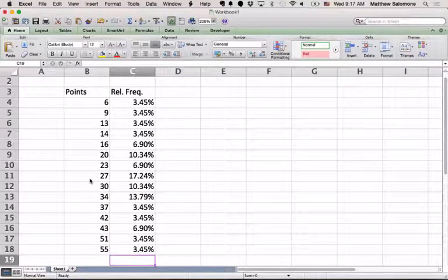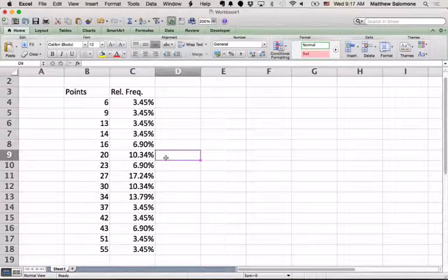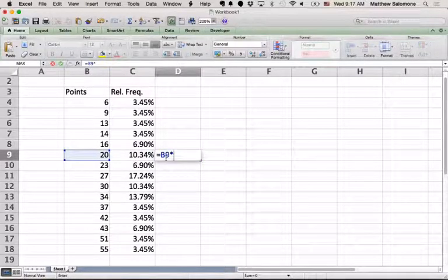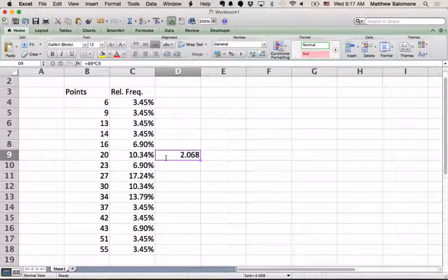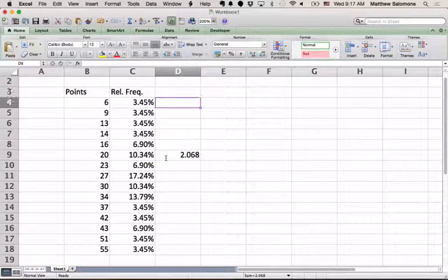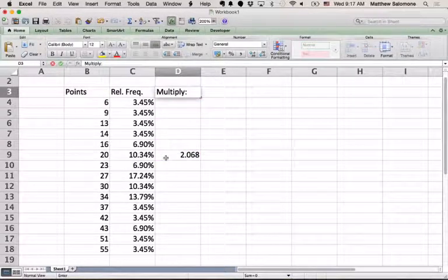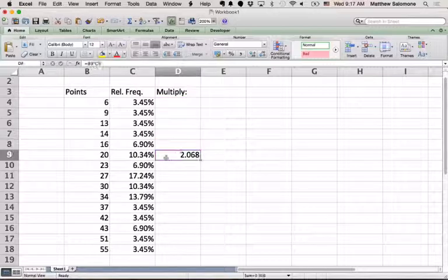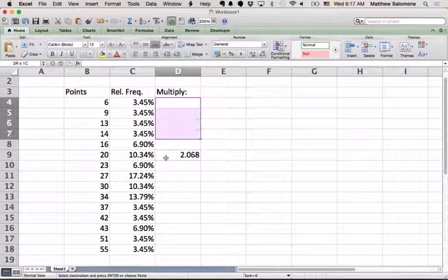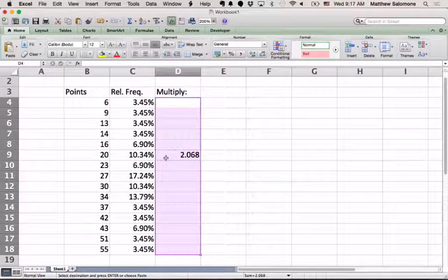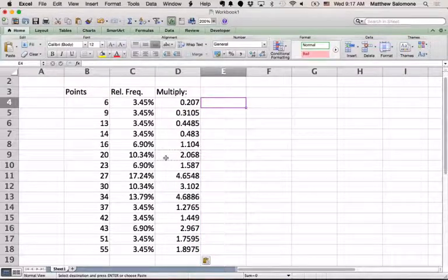All right, so now we have all the number of points and the relative frequencies in here. We know what we need to do first, and that's multiply these across. So that's what we did with the example of 20 times 10.34%. When we multiply across, we ended up with 2.068. Okay, if I do that same thing for all of these different rows, I'll get all of those different values.